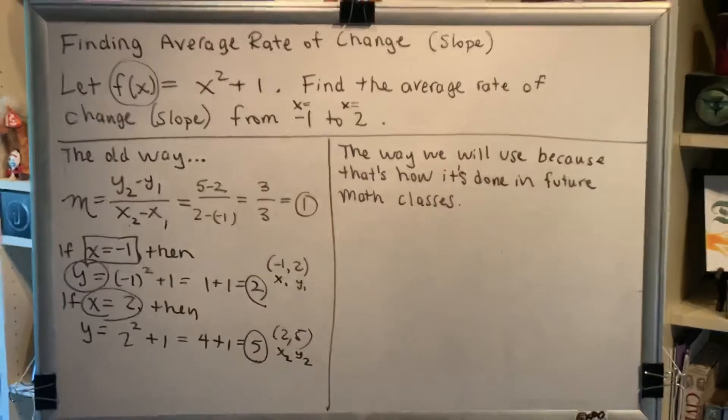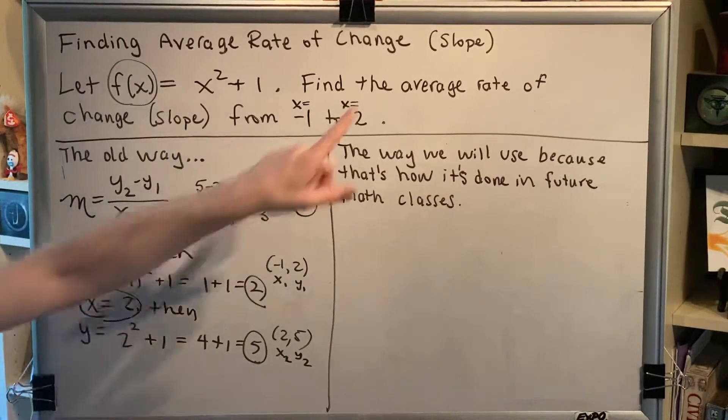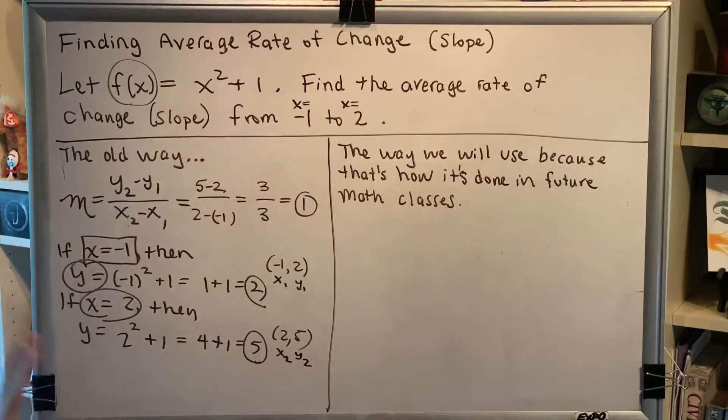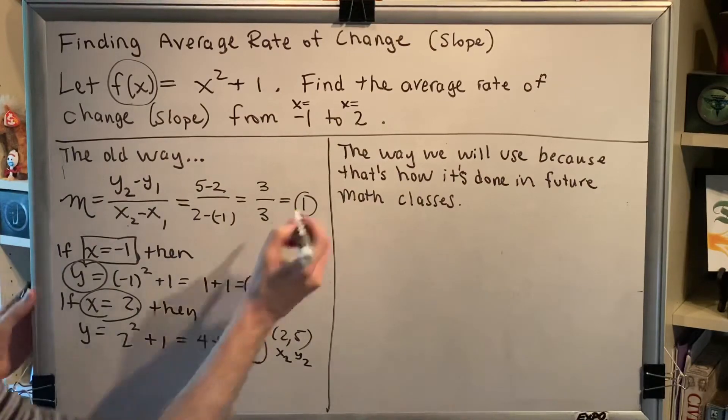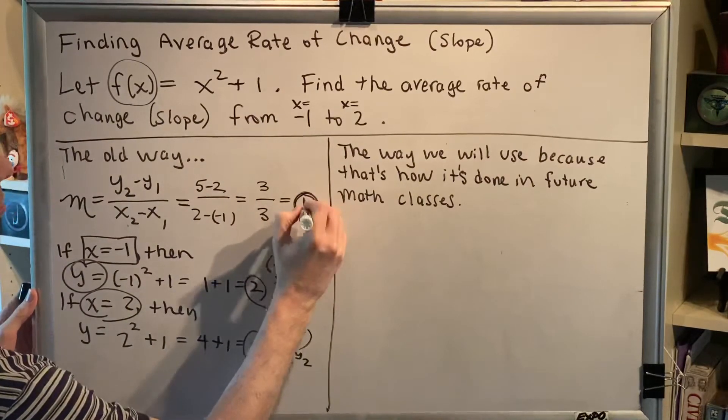All right, so this is the old way. Remember, slope and average rate of change are saying the same thing. So we've now found the average rate of change. It is 1.